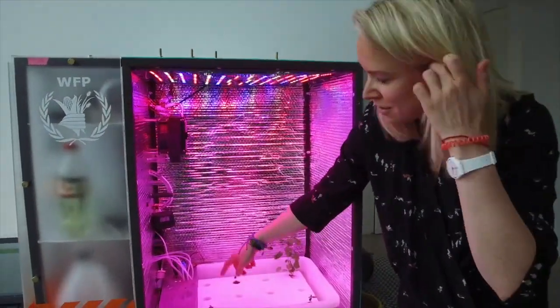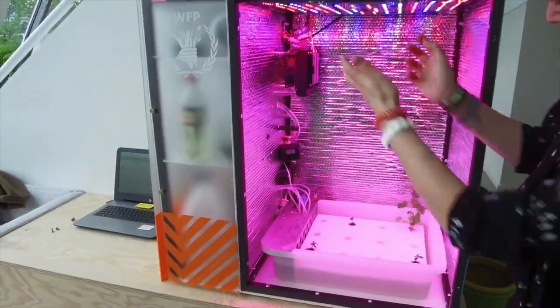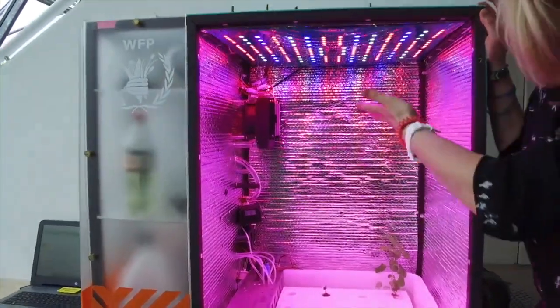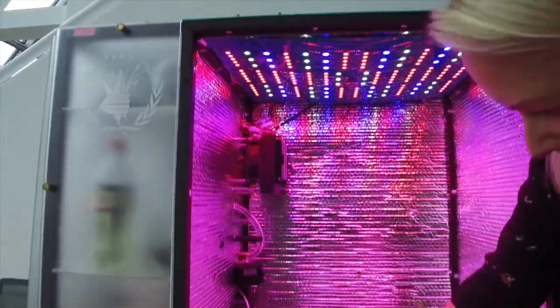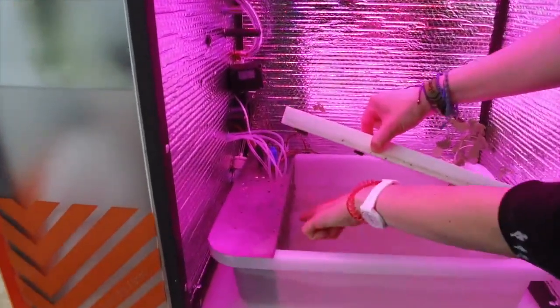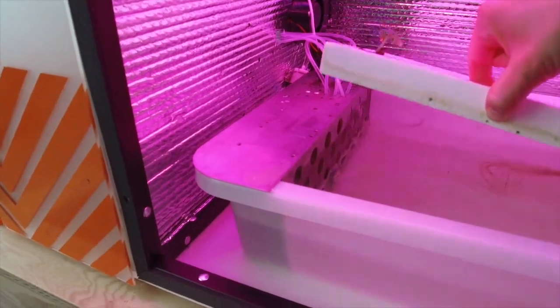So the nutrients come in through these little tubes. The light comes obviously from here that recreates the sunlight. And the oxygen gets pumped into here by this water pump. So you see the water is always in movement.